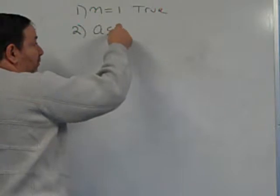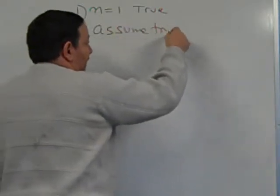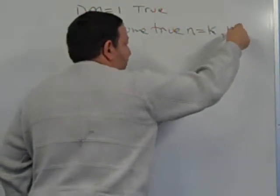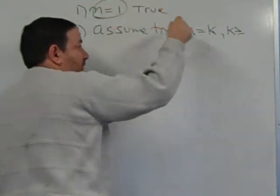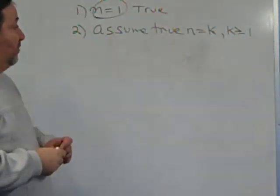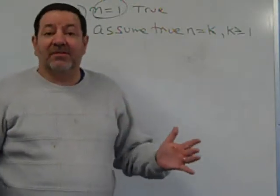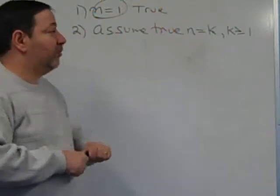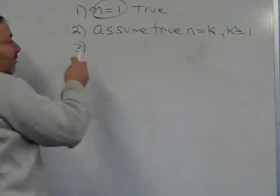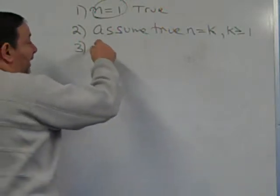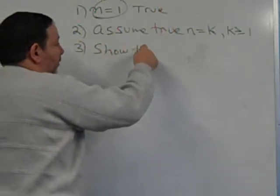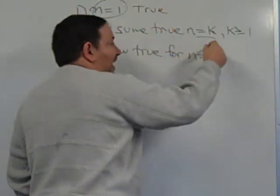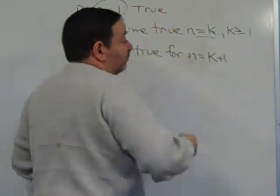We assume that the statement is true for n equal some integer k, and that integer should be at least 1. All we know for now is that it's true when k is 1. Nonetheless, we assume it's true for any integer. Then we show that this statement is true for not k, but the very next integer, k plus 1.